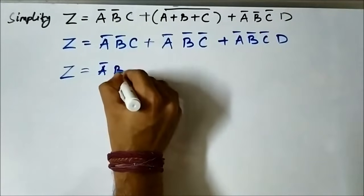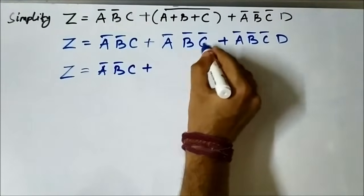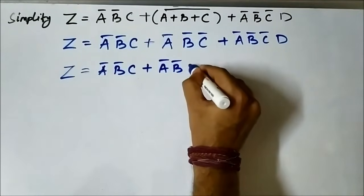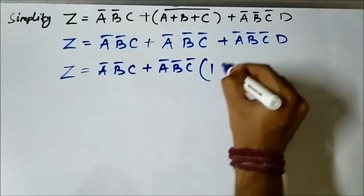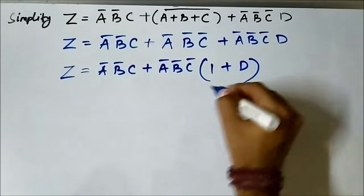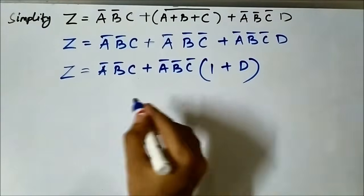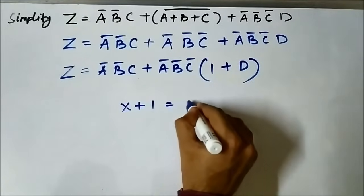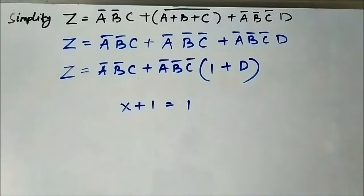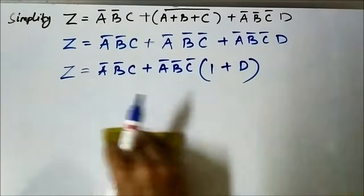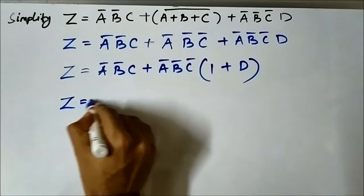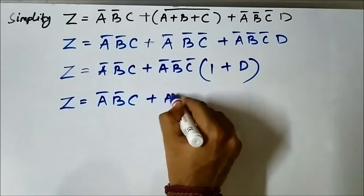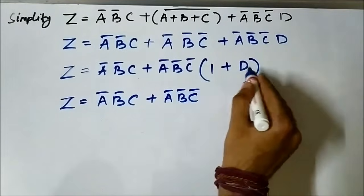Taking ā·b̄·c̄ common from those two terms gives ā·b̄·c̄·(1 + d). We have the Boolean OR rule which states that any Boolean variable OR'd with 1 gives 1. So 1 plus d will be 1, and it becomes z equals ā·b̄·c plus ā·b̄·c̄.